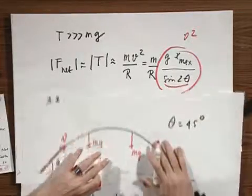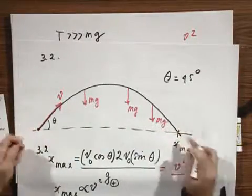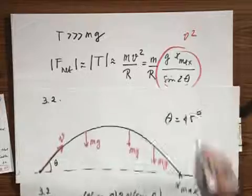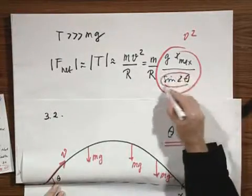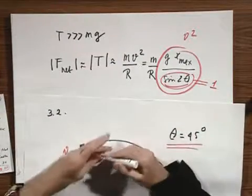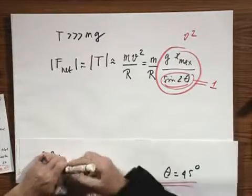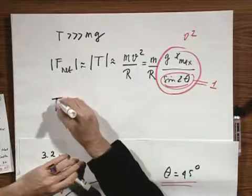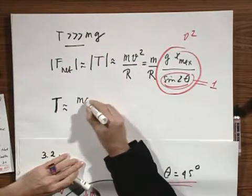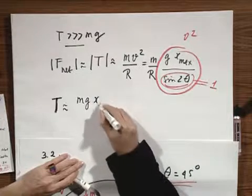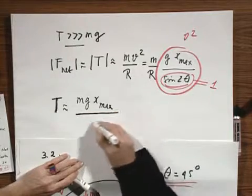I'll take the case that the object reaches the farthest distance possible. That means the sine of two theta must be one. That means theta is forty-five degrees. So I will assume that this here equals one. And what I find then, that's one of the results that you were asked to calculate, that then the tension to very good approximation equals M G times X maximum.